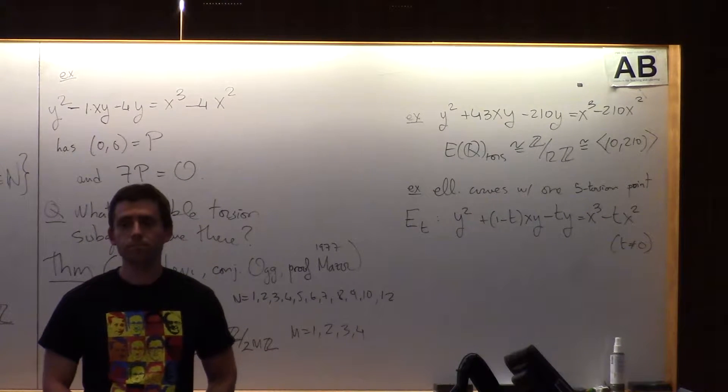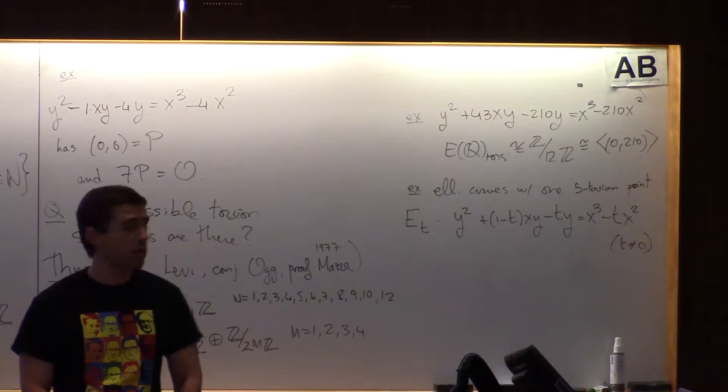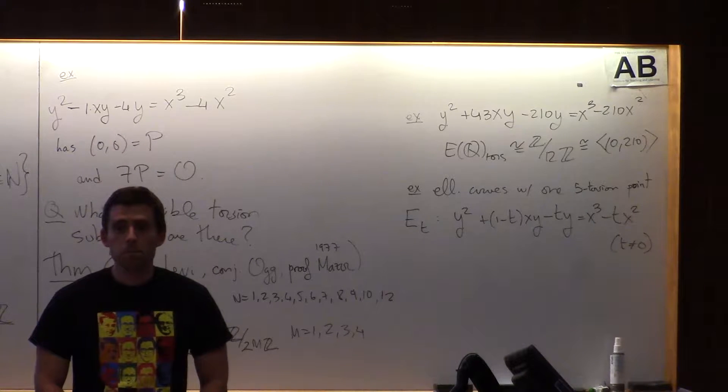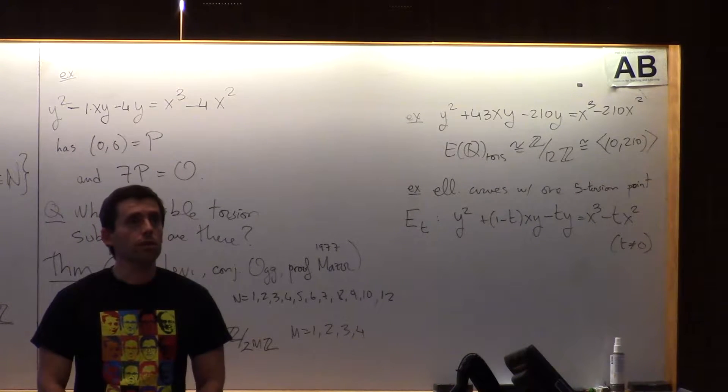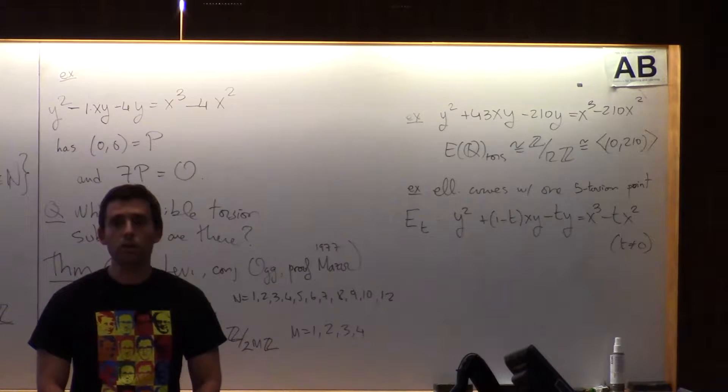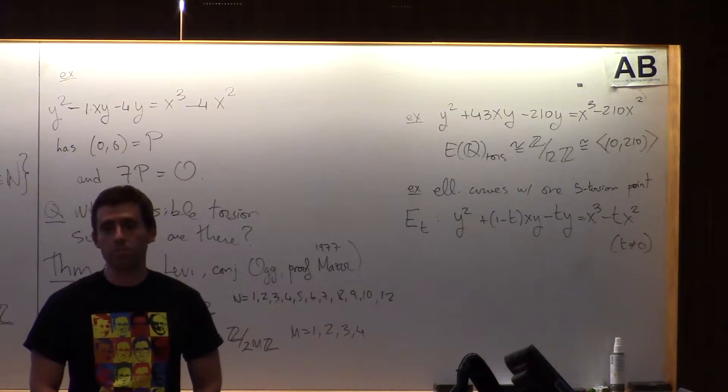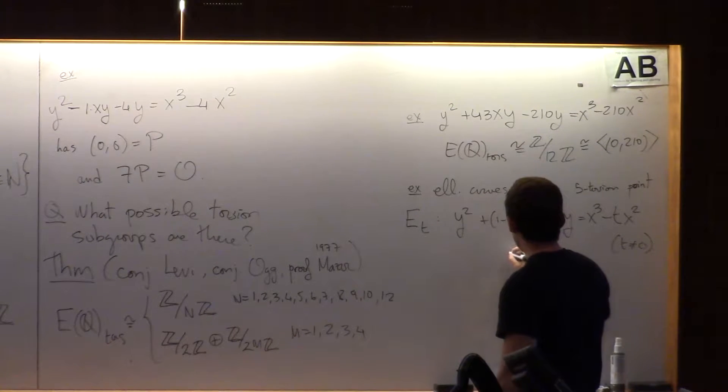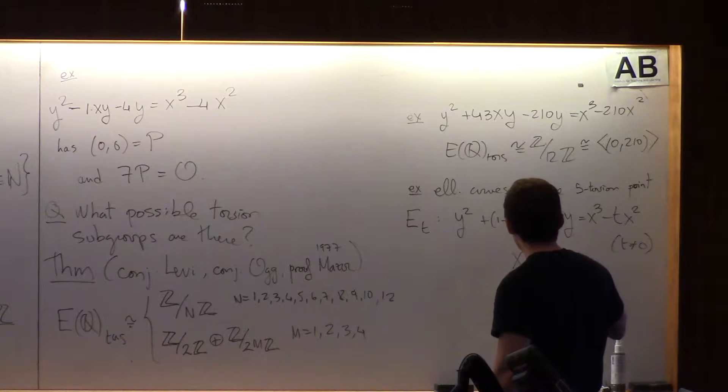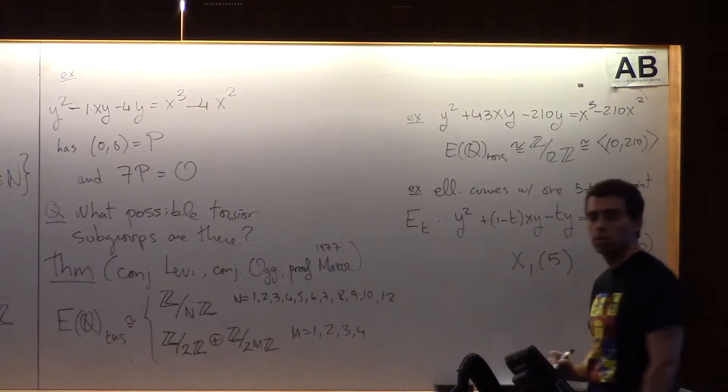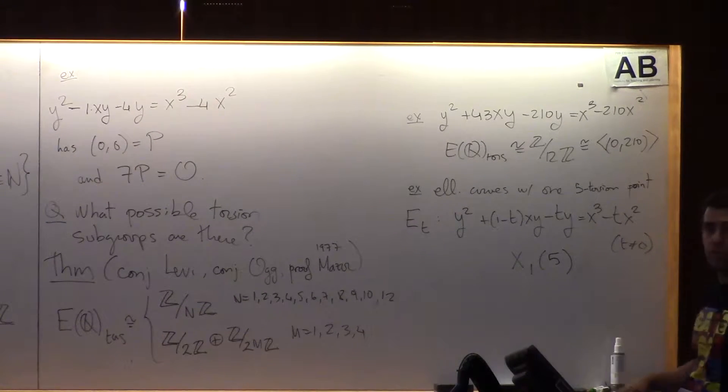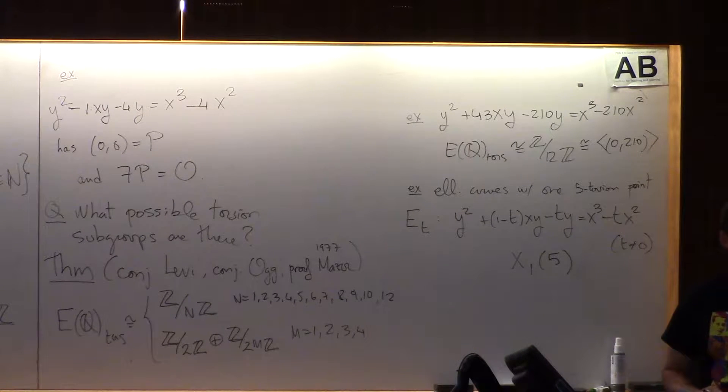Student: When you said t equals zero, do you get a singular curve then? Yes, that's why it's excluded. It's the only one you have to exclude. Student: And then a cusp or a node? That corresponds to a cusp in the modular curve that this is parameterizing. This would be a model for X_1(5). If you go to Gamma_1(5), calculate how many cusps are there. The one with t equals zero is one of the cusps.